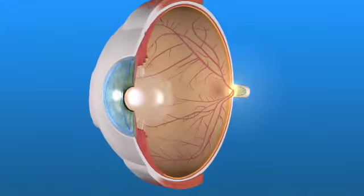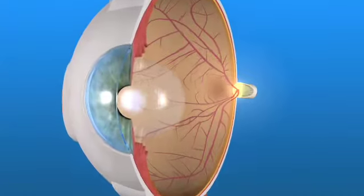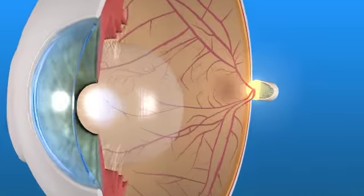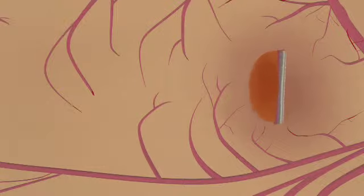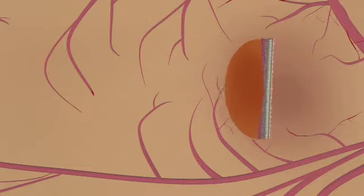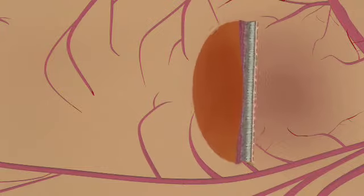The retina is made up of many layers that are sandwiched together into a smooth surface. These layers work together, allowing us to see clearly.